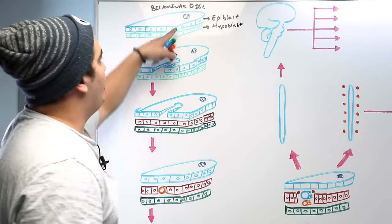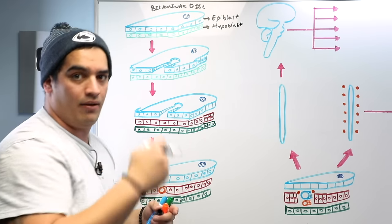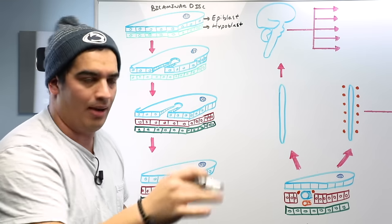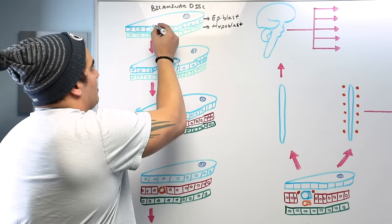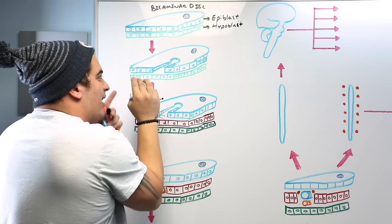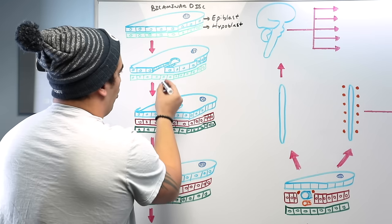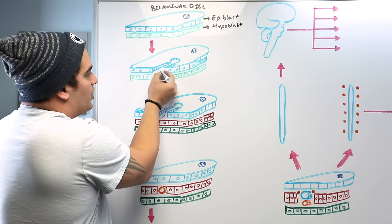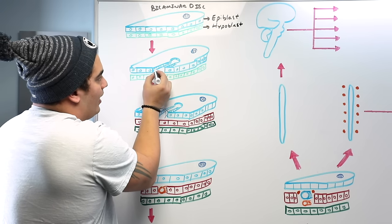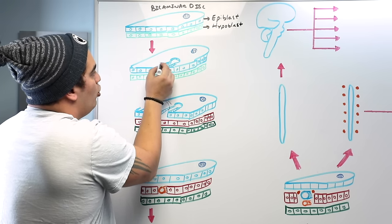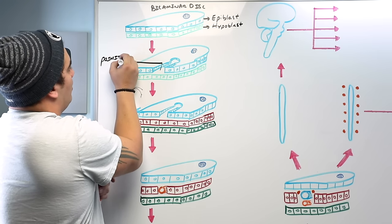For orientation, this little blue dot is called your pre-cordal plate — that's towards the head or cranial end of the embryo. What happens is the bilaminar disc starts having some tissue degrade away, forming a little structure called the primitive streak.